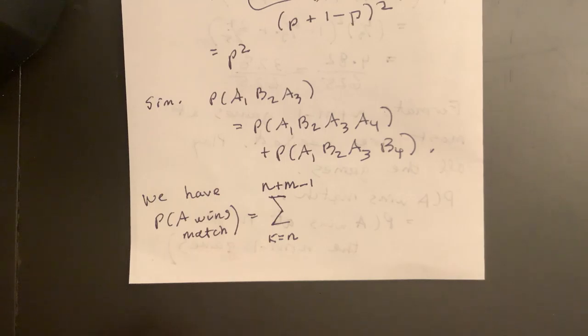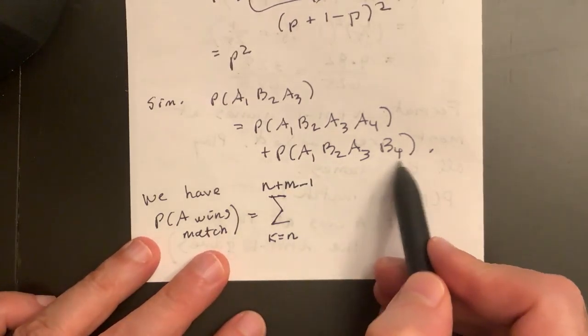So you need this to be your max. You see in the example before, M was three, N was two, which is five minus one is four. And that is the max number of games.